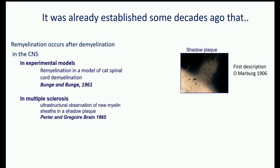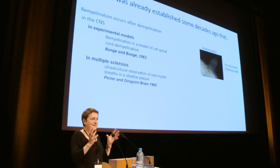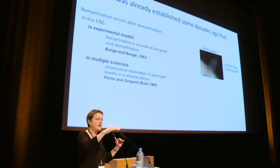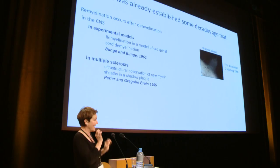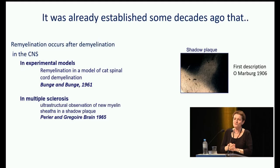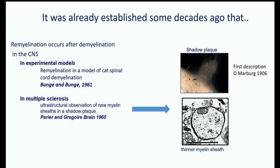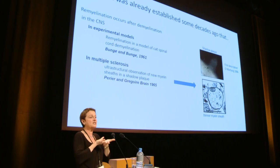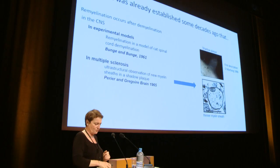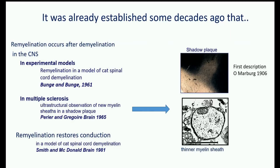Périer and Grégoire conducted an electron microscopy ultra-structural study demonstrating that within shadow plaques were thinly remyelinated axons — the axon with a thin rim of myelin absolutely typical of remyelination. Published in Brain in 1965, this was the first EM representation of remyelination in MS. Later, Ken Smith and Young MacDonald showed in 1981 that remyelination can restore conduction velocity in an experimental spinal cord demyelination model in cats.